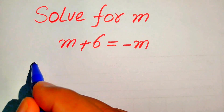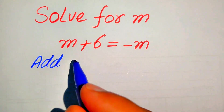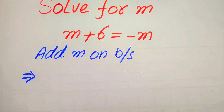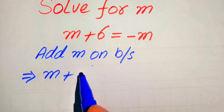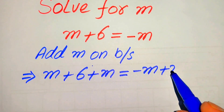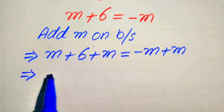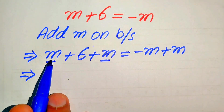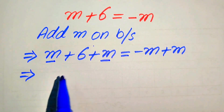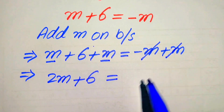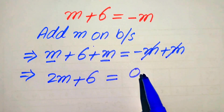In the very first step we need to add m on both of the sides. We move the variable term to the left hand side — when we add m on both sides it is written as m plus 6 plus m equals minus m plus m. We add the like terms; the coefficient of each m is 1, so after adding we get 2m plus 6 equals 0, since the negative and positive m terms cancel out.